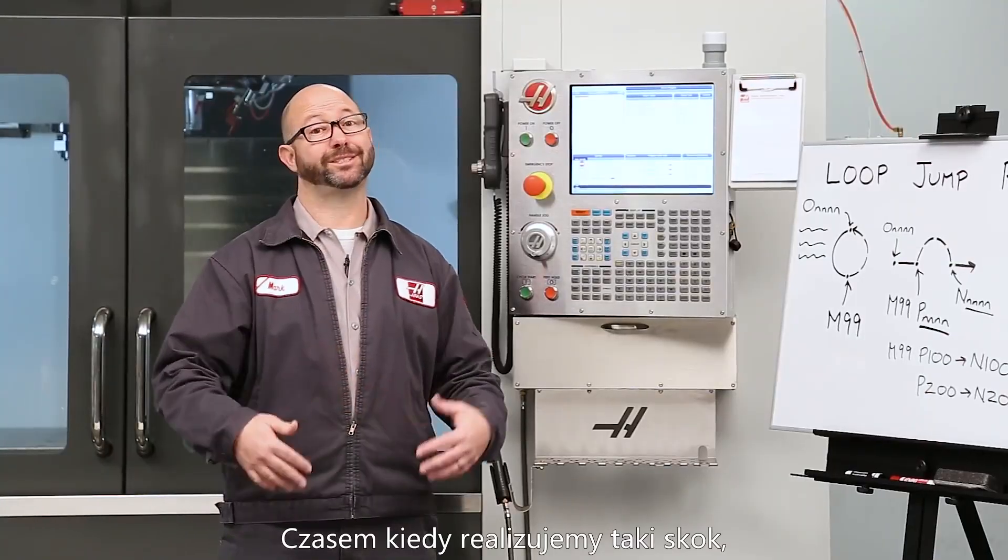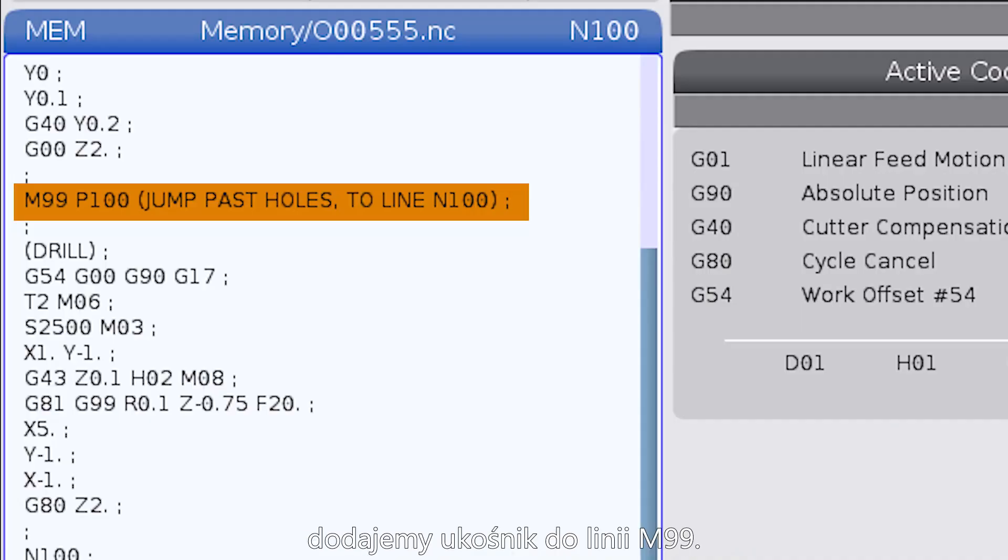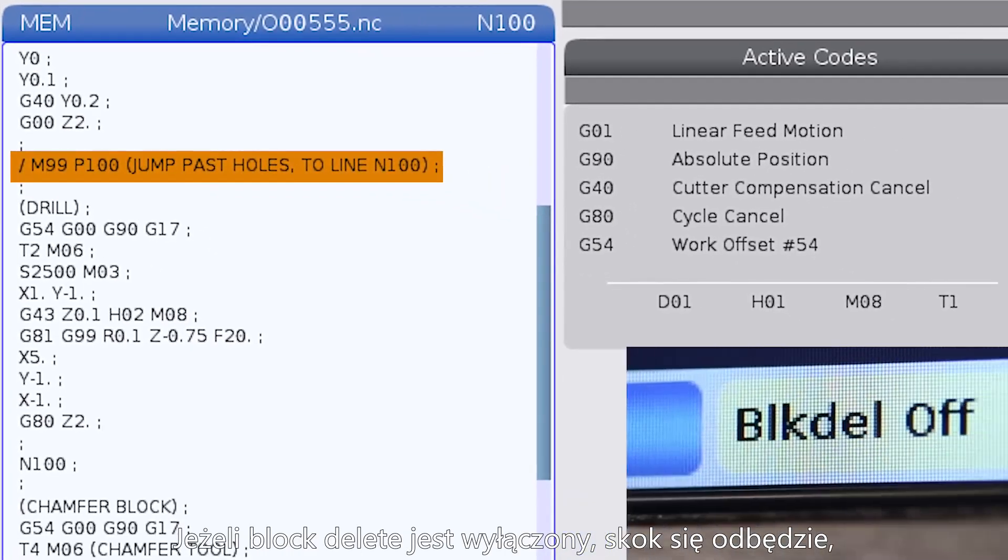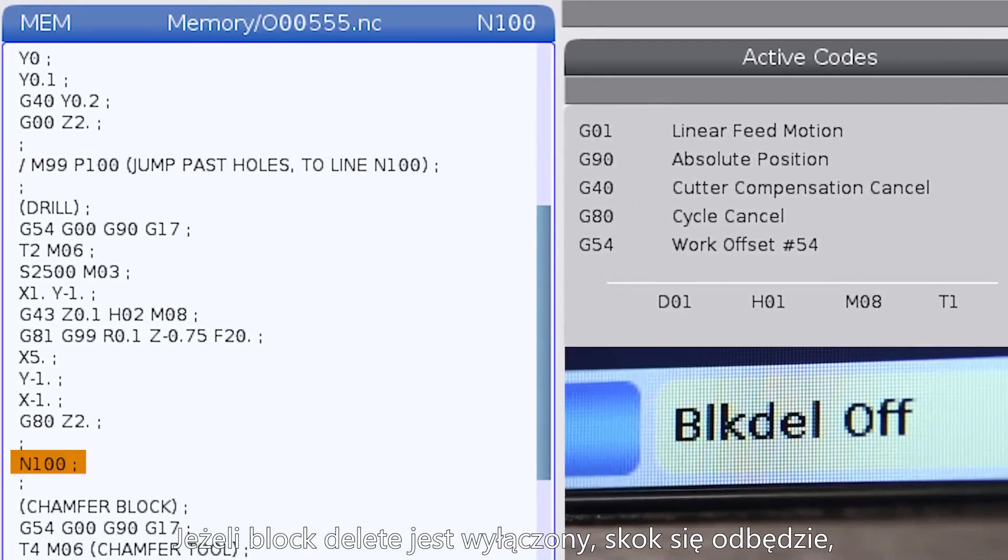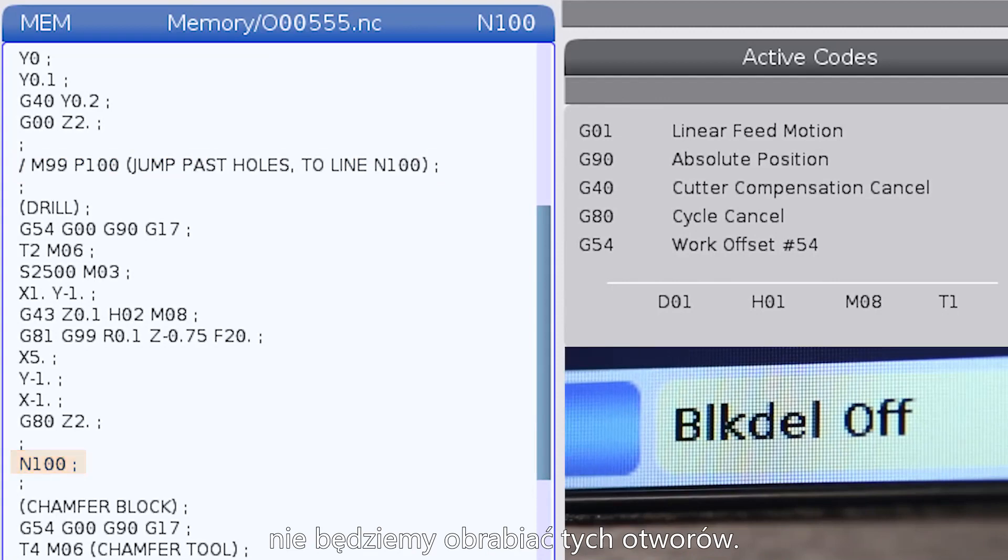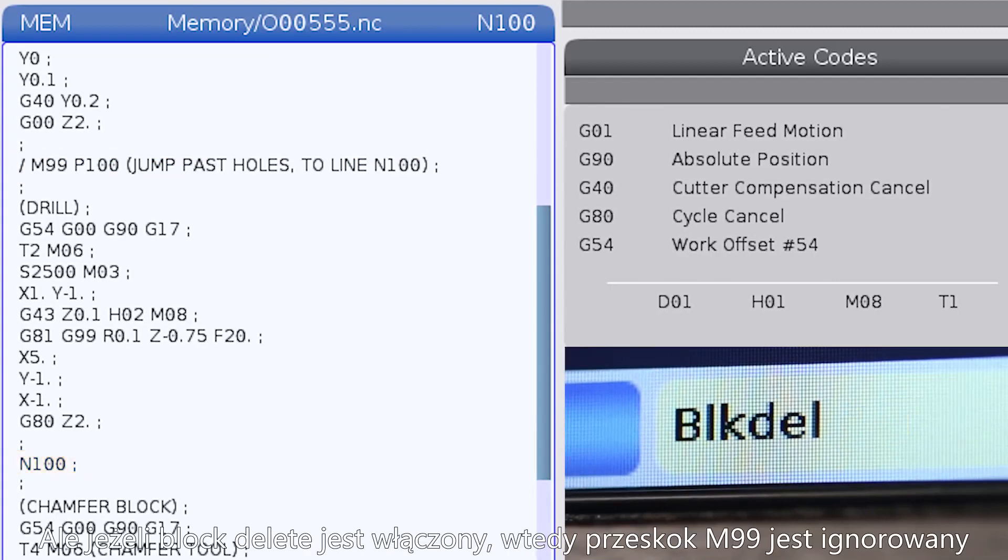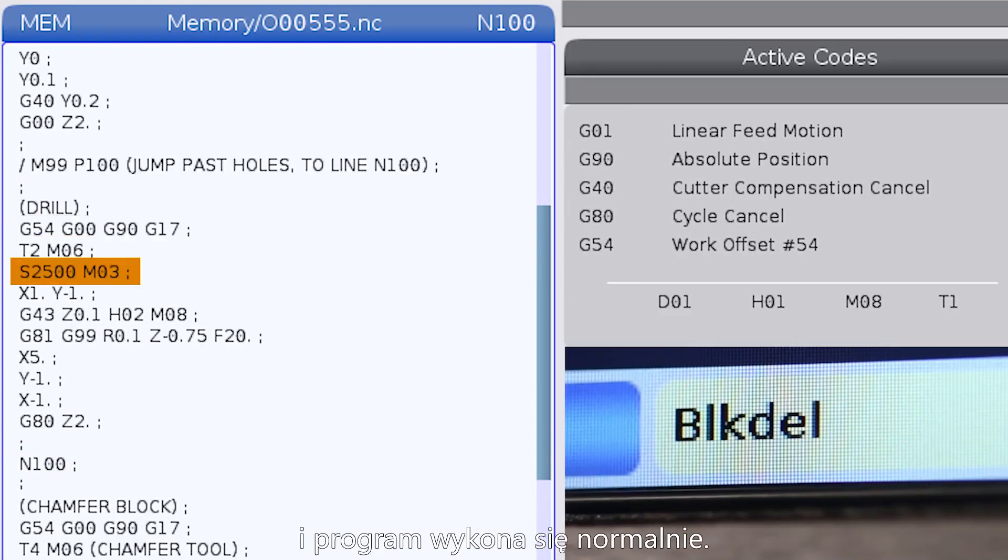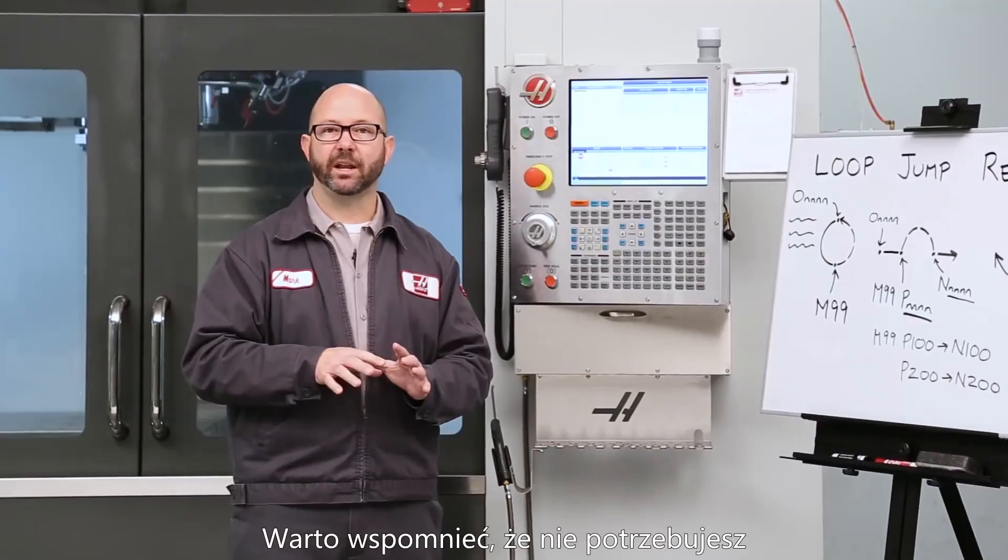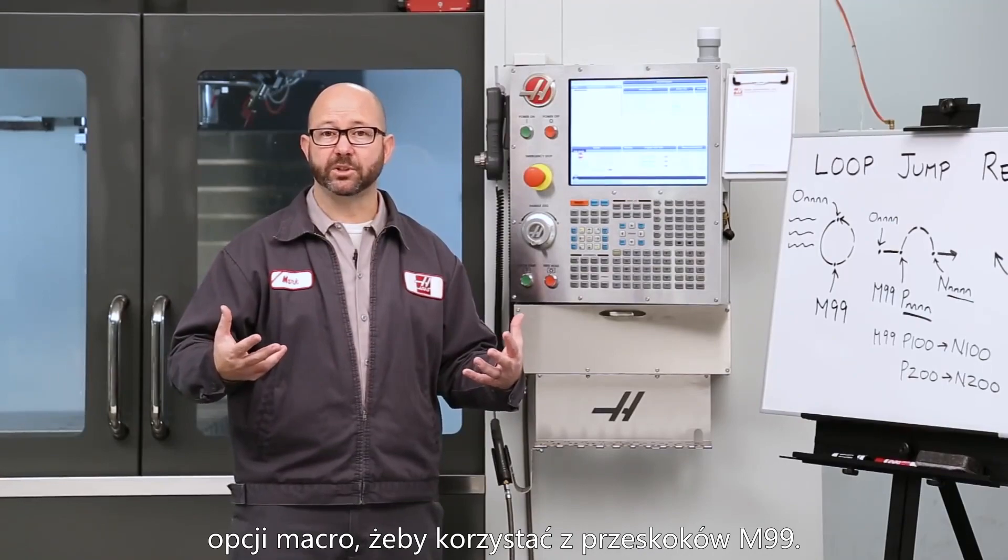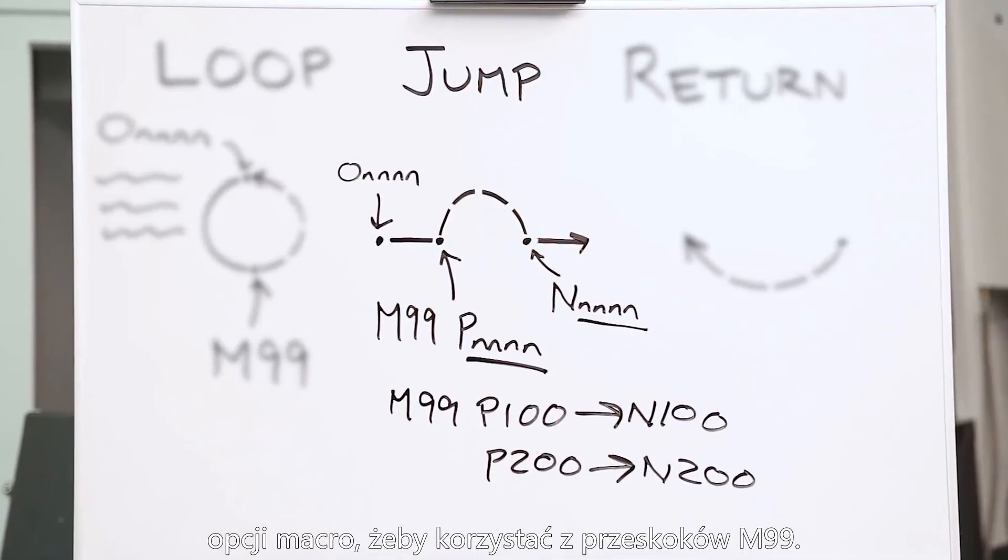If we only want to make this jump sometimes, then we can add a Block Delete right to our M99 line. If Block Delete is off, then we're going to make the jump and we're not going to run those holes. If Block Delete is on, then the M99 jump line is ignored and we run the program normally. It's worth mentioning that you don't need the macros option in order to use this M99 jump.